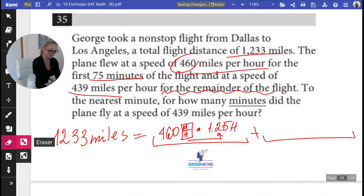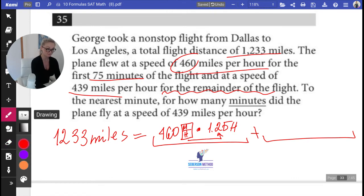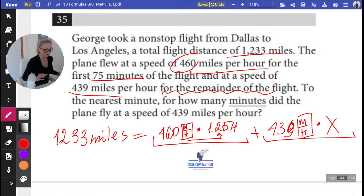That is 75 minutes in hours, times 1.25 hours. This is a bad five, but you guys believe me. Plus 439. Again, fridge, again miles, again hour, times X, because that's what we're trying to find out. Okay.